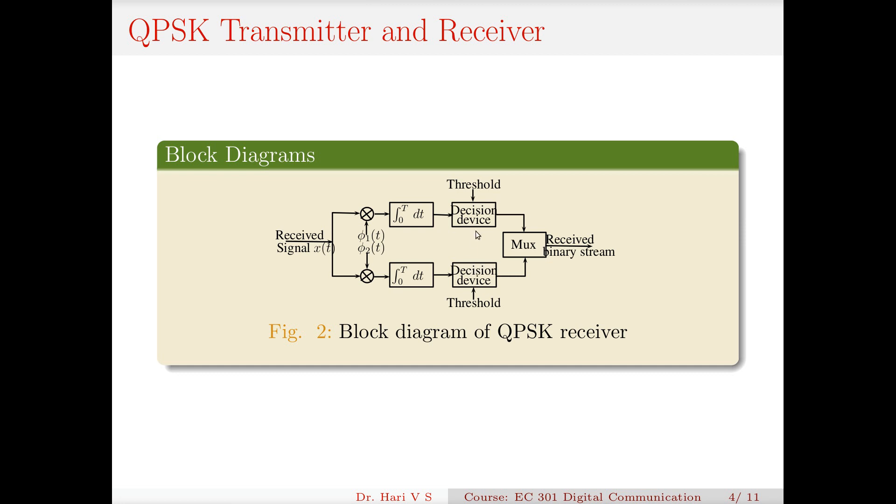Here it is multiplied by cos(2*pi*fc*t), so this product - this is equivalent to a dot product in vector algebra. Then a threshold is taken. This is like two BPSK receivers working in parallel. Here there is a decision device. If it is greater than zero, one is selected. If it is less than zero, minus one or zero is selected.